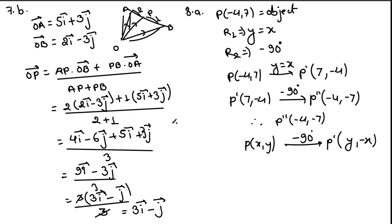Question 8a: find the image of point P(−4, 7) when reflected on the line y = x, followed by a rotation of −90° about the origin. Reflection of P(−4, 7) on y = x gives (7, −4). Then rotating (7, −4) by −90° about the origin: for point (x, y) under −90° rotation, the image is (y, −x), giving (−4, −7). Therefore the final image is (−4, −7).